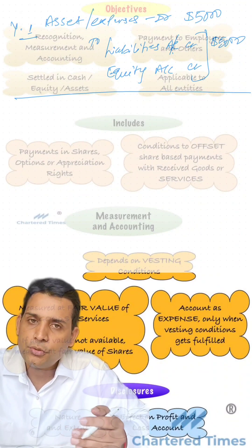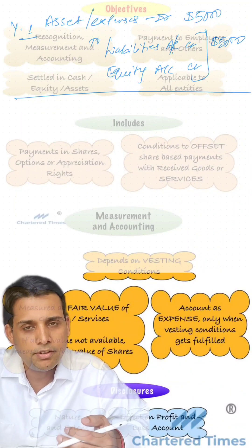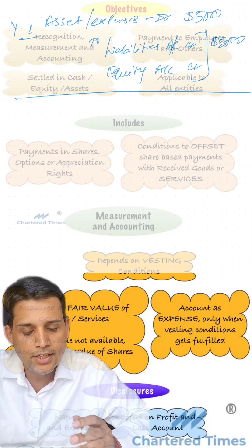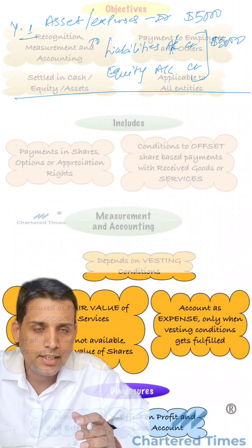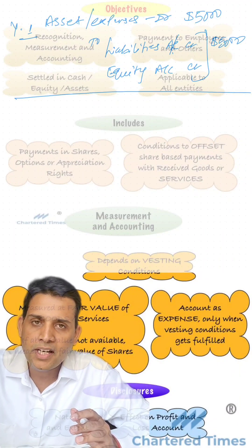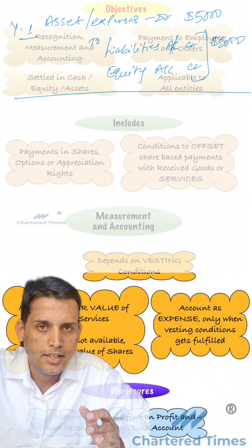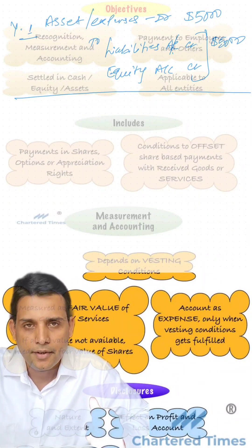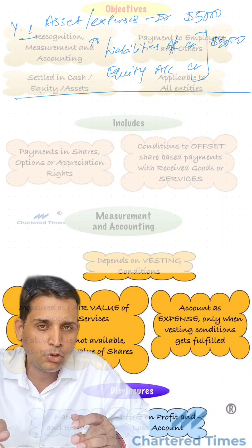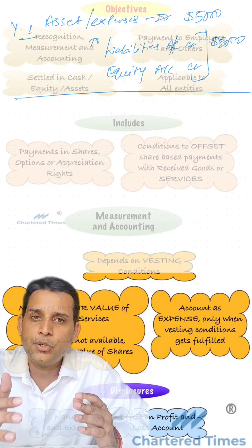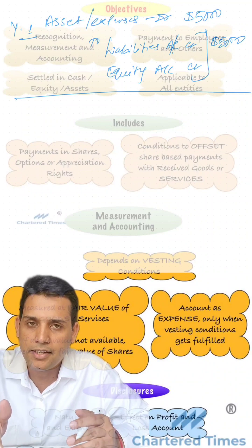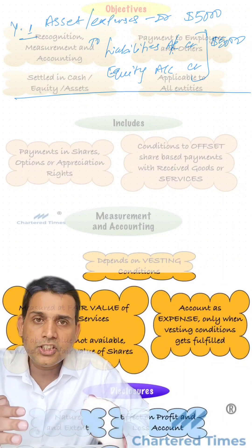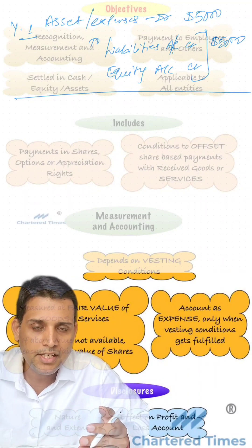At the end of year two, you evaluate how much liability you've already booked and how much of the vesting conditions have been met. For example, if the option was for a group of 10 people and 2 have left, the liability reduces to 80% of the total obligation — you only recognize the balancing amount. If share prices have fluctuated and your liability is based on the fair value of the underlying shares, you must adjust for that change at the end of every year.